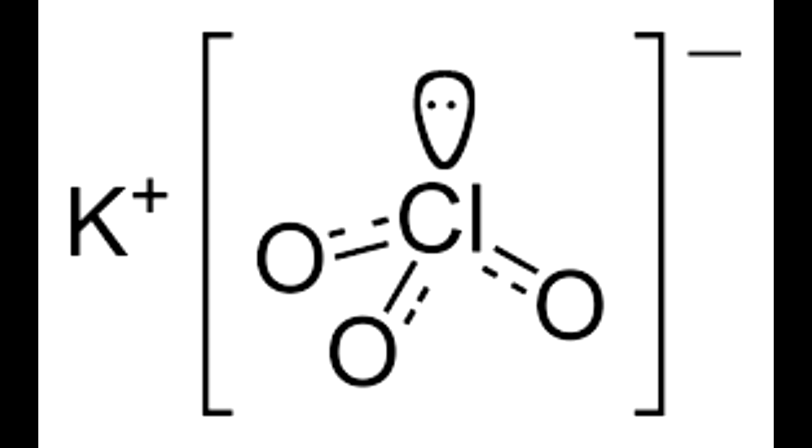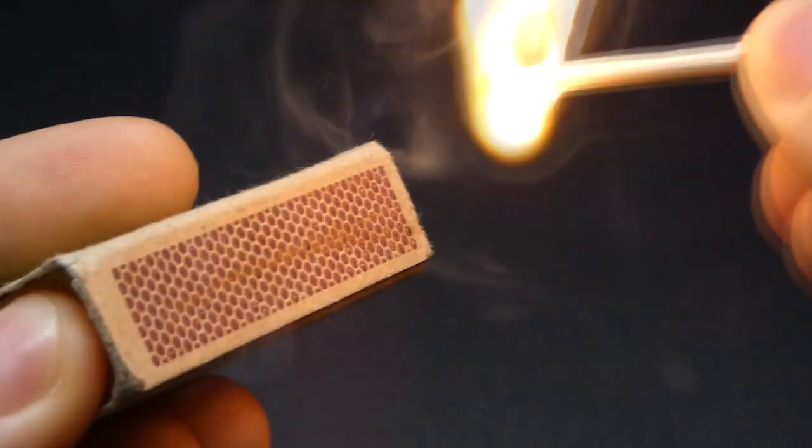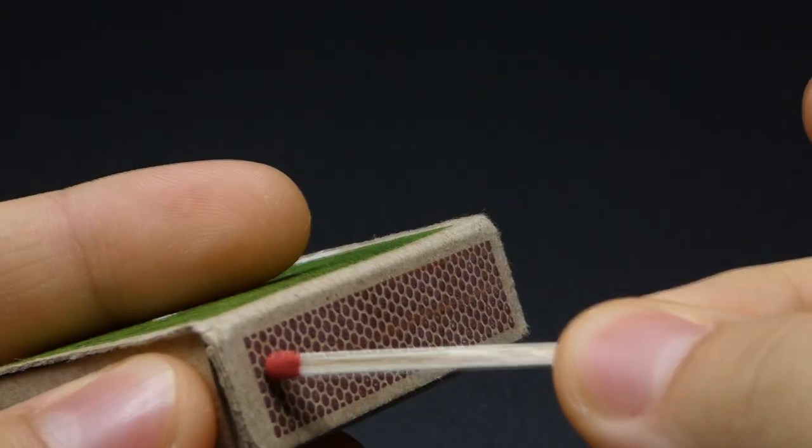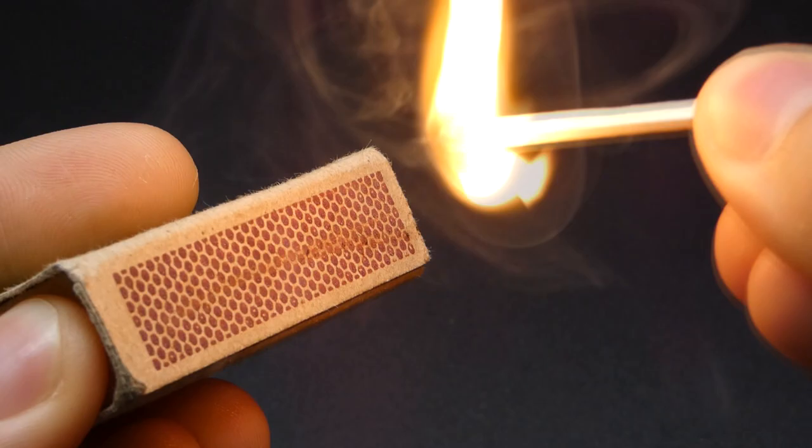So, our first point of interest is the potassium chlorate with the chemical formula of KClO3. A typical match head contains about 50% of it. It is the main ingredient allowing the match to burn. When you ignite a match, it reacts with the phosphorus and generates heat which initiates a chemical reaction with sulfur, which in turn allows the match to burn.